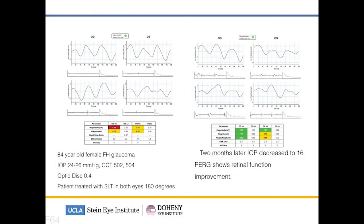So how does that help us clinically? Here is just one small example of a patient — an 84-year-old female with a strong family history of glaucoma. She has high intraocular pressures in the mid-20s and corneal thickness which is relatively low in the 502 to 504 micron range. This patient has a normal optic nerve with a cup-to-disc ratio of 0.4, but because of her risk factors we elected to go ahead and treat her intraocular pressure and bring that down.